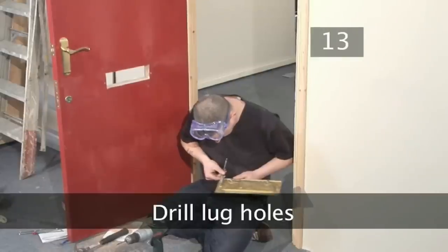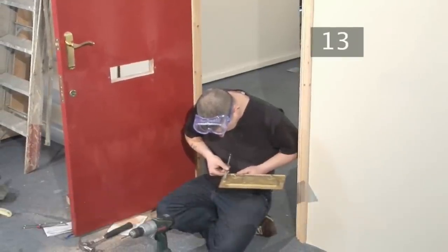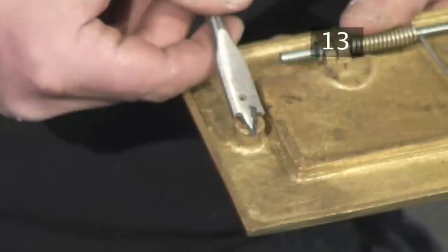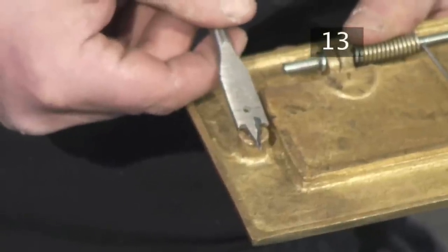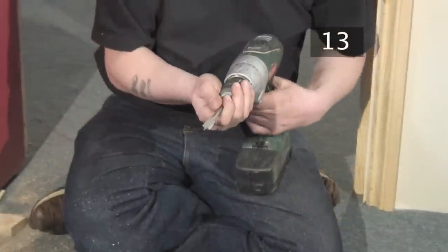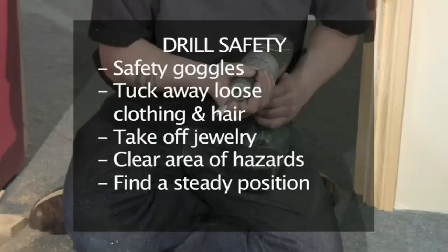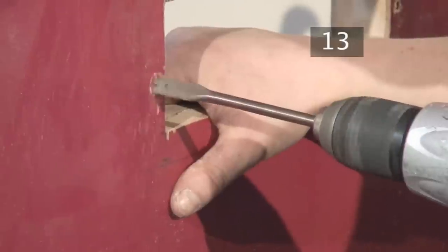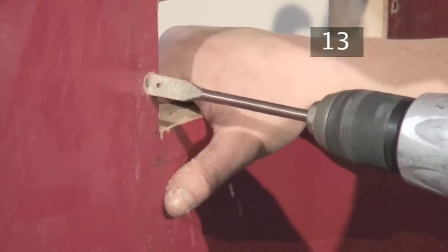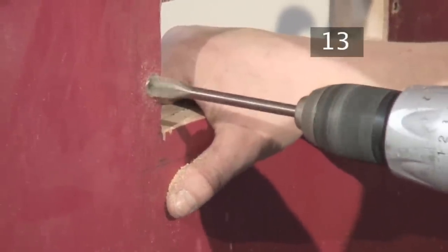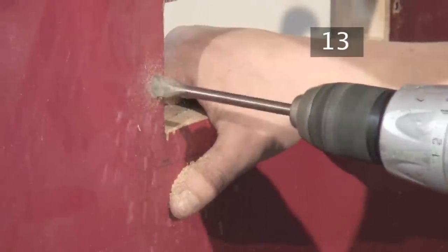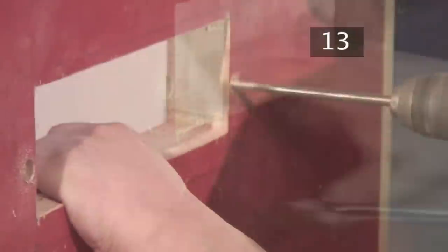Step 13. Drill lug holes. Now select a drill bit that matches the size of the lug holes and attach it to your drill. Remember your drill safety. Hold the drill over one of the existing holes and drill about halfway into the door. Make sure that you keep the bit level. It would be very easy to split the wood here.